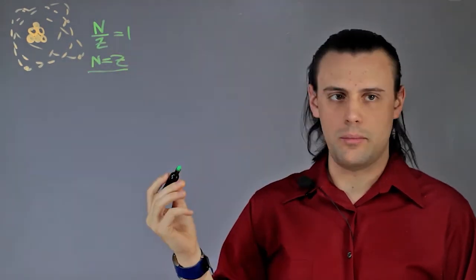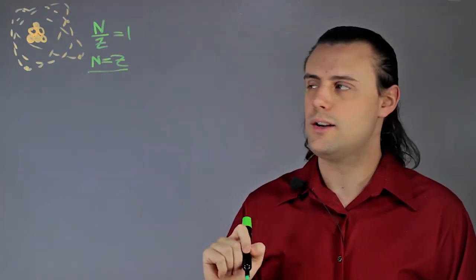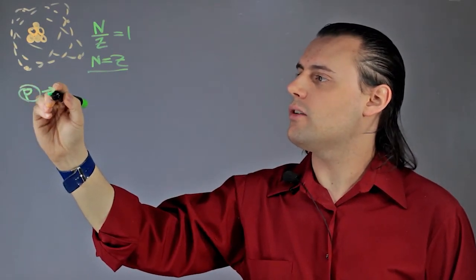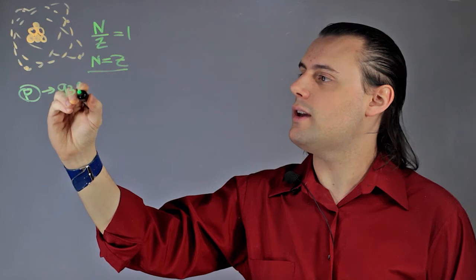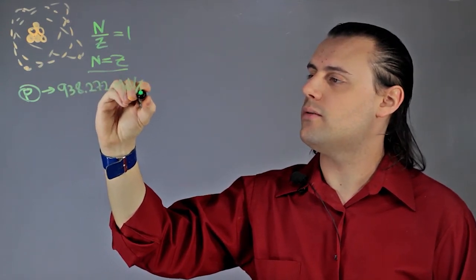Now, the next step is to understand what the mass is of a proton, a neutron, and an electron. Mass of a proton is approximately 938.272 mega electron volts per speed of light squared.